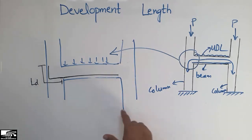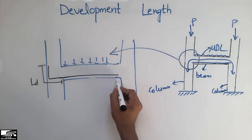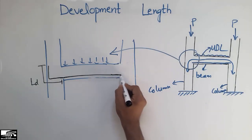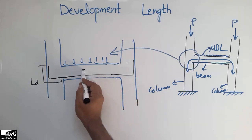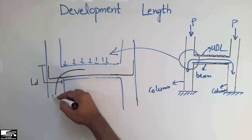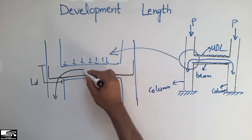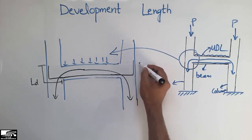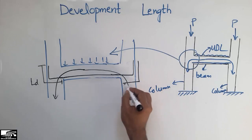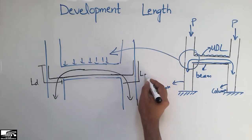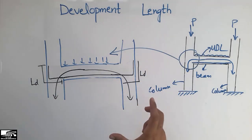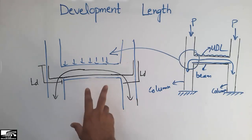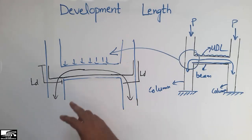Similarly, on the right side of the structure, to transfer the load into the foundation, I have to extend the steel bar from the beam into the column. The load will then be transferred from the beam into the column and then into the footing. This length extended from the beam into the column is known as the development length, represented by LD.